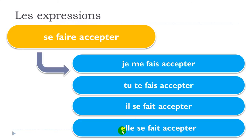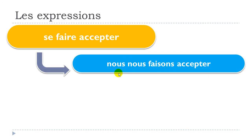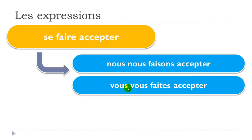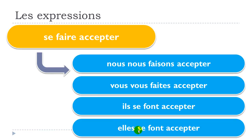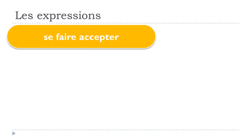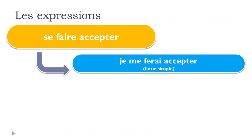Now for the plural forms: nous nous faisons accepter, vous vous faites accepter, ils se font accepter, elles se font accepter. Remember: je me, tu te, il/elle se, nous nous, vous vous, ils/elles se — then conjugate the verb accordingly.